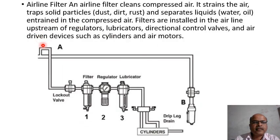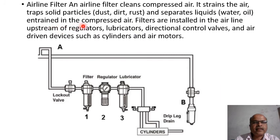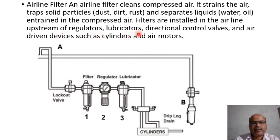Generally, an air line filter cleans compressed air. It strains the air, traps solid particles such as dust, dirt, rust, and separates liquids like water and oil that have entered the compressed air. Filters are installed in the air line upstream of regulators, lubricators, directional control valves, and air driven devices such as cylinders and air motors.